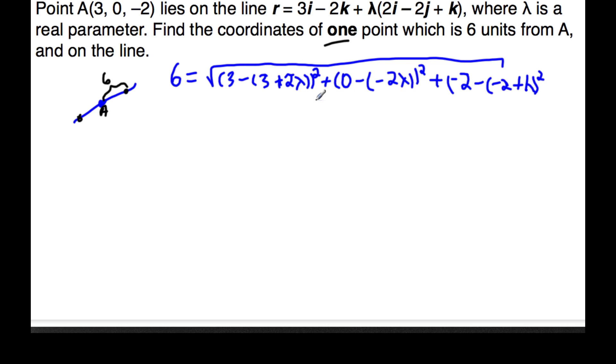Okay, as we simplify this, 6 equals square root. It looks pretty bad at the start, but watch, 3 minus 3 goes away, 2λ squared is 4λ squared. Here is again 4λ squared, so we have 4λ squared plus 4λ squared, minus 2 plus 2 goes away, and you end up with λ squared, and you can see this falls out really nicely.